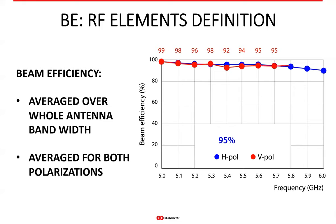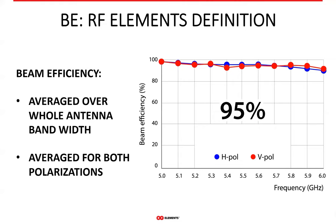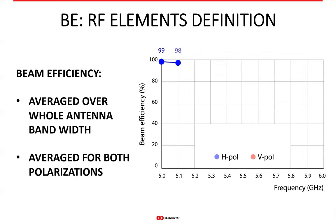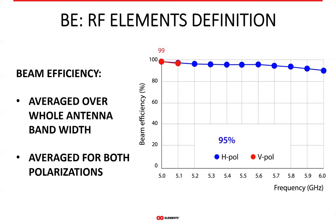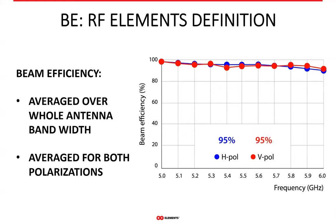Since computational power today is much more affordable than in the past, the choice between wideband or narrowband information is really a matter of deciding what is important rather than what we're capable of. Today you can easily do both. In the WISP industry, it makes perfect sense to average beam efficiency over the whole bandwidth an antenna works in, because WISPs use their antennas in a wide frequency band, and it absolutely makes sense that an antenna should perform well across that whole bandwidth.